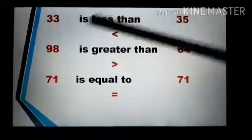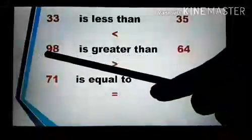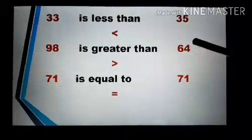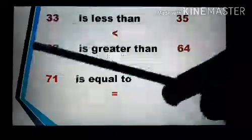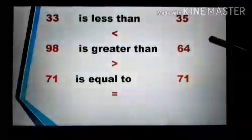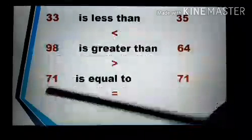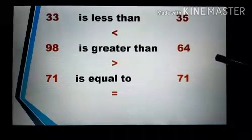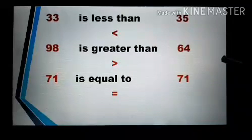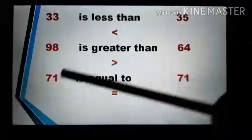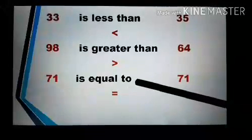Then we have 98 and 64. First of all we will compare the first digit: 9 and 6. 9 is greater than 6, so we can say 98 is greater than 64. We use this symbol for greater than. Next we have 71 and 71. Compare the first digit, which are the same, then the second digit, which are also the same. So we can say 71 is equal to 71, and we use this sign for equal to.